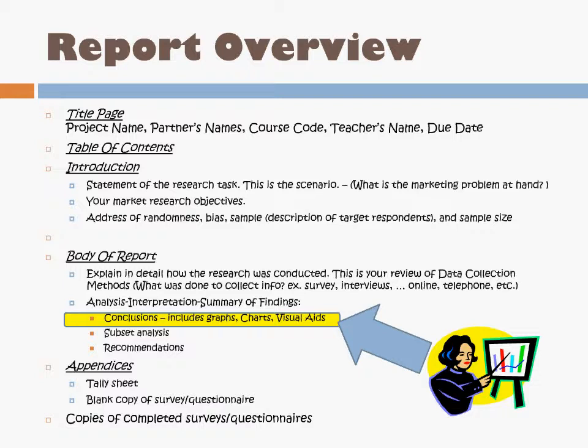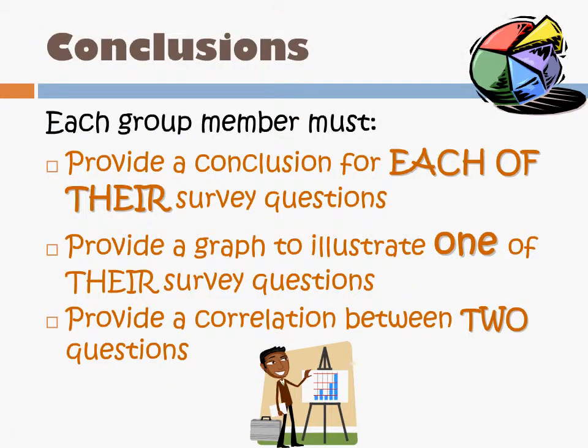This is where you're going to include some graphs, some charts, some visuals to represent the data. Each group member must provide a conclusion for each of their survey questions. Each of you contributed 5 survey questions to the survey. You now need to conclude the results of your questions — not necessarily questions 1 through 5 for member A, 6 through 10 for member B, and 11 through 15 for member C — it's your specific 5 questions. For one of your survey questions, you must provide a graph to illustrate the results. You'll also eventually provide a correlation between two questions of your choice, and we'll look at that in the next video.